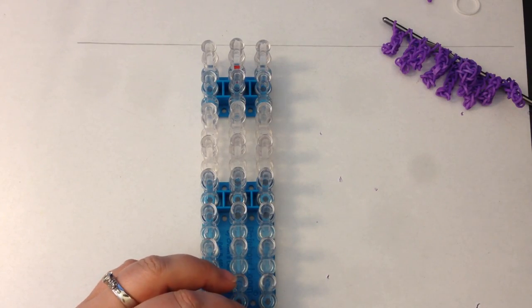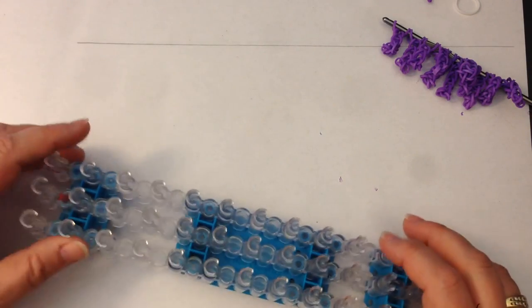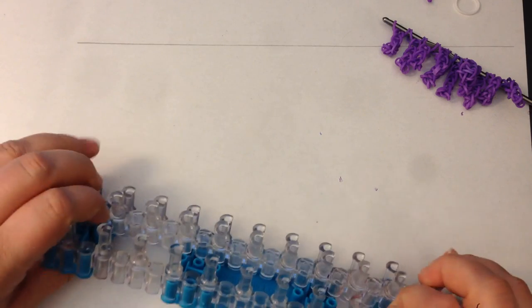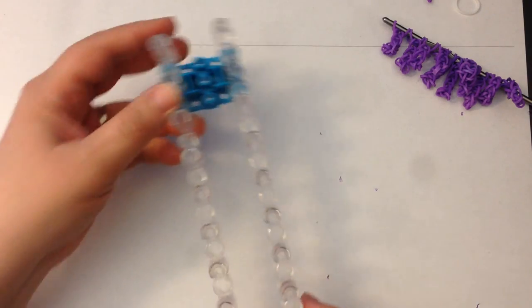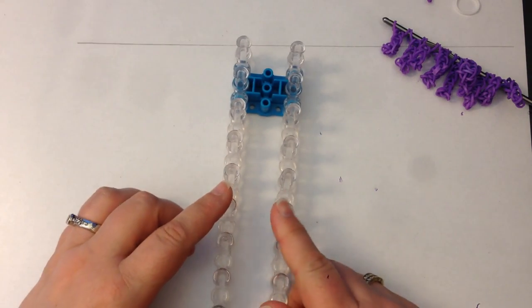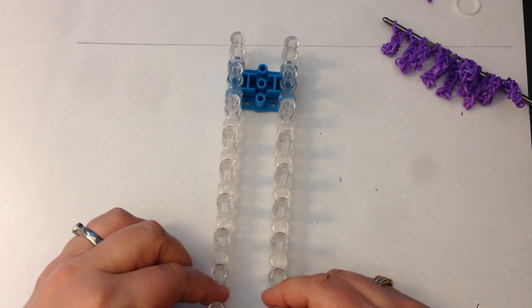All we're going to need is a single loom. You are going to pop out the middle column. We don't need that. And you're going to pop out the big base of it. Your other two columns are going to be facing the same way.